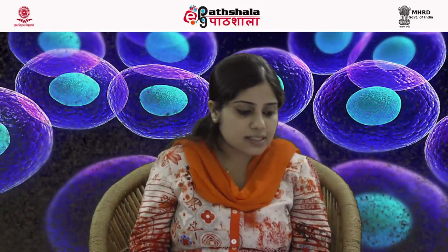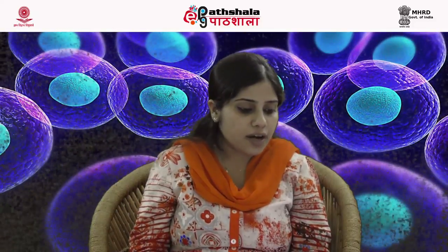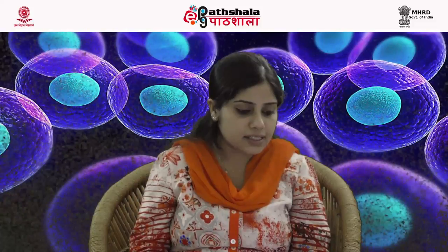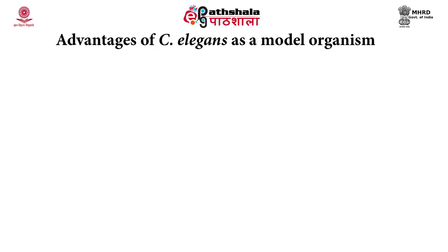The traditional use of genetics in C. elegans deals with forward genetics, which starts with a screen or selection to identify mutants with a particular phenotype, after which the wild type role of the gene is inferred from the nature of the mutant phenotype. The Nobel Prize in Physiology or Medicine was awarded in 2002 for C. elegans research. It was awarded jointly to Sidney Brenner, H. Robert Horwitz and John E. Sulston for their discoveries concerning genetic regulation of organ development and programmed cell death. Let us now study some advantages of C. elegans as a model organism.